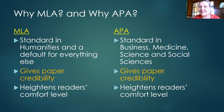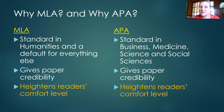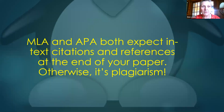Both are important because they give the paper credibility. If you don't have a citation, nobody knows they can trust what you're saying or where you got it. MLA and APA both expect in-text citations and references — if you don't follow one or the other in a research setting, it's plagiarism. That's probably the most important thing.